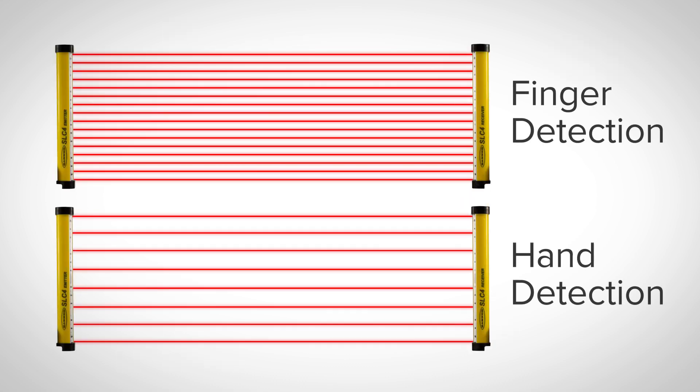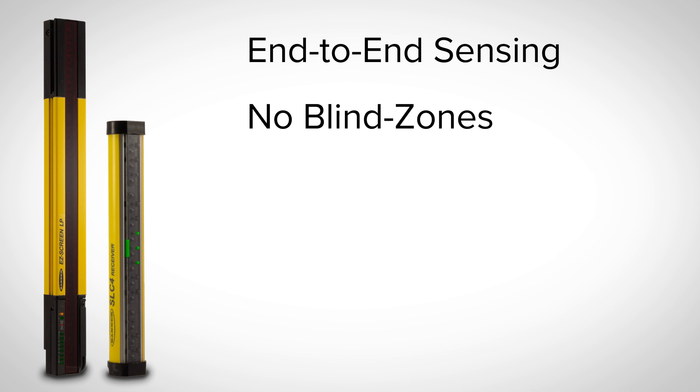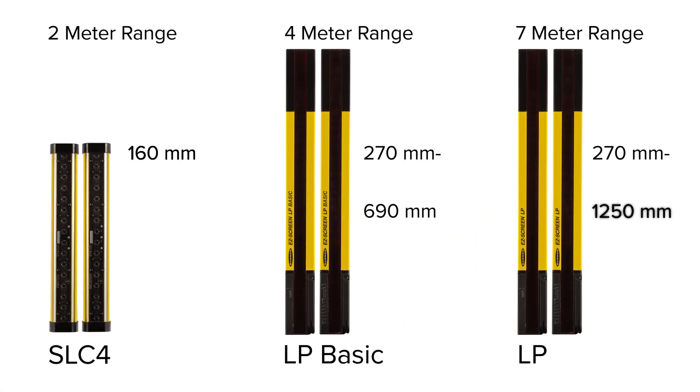All models come in two resolutions for finger and hand detection. They have end-to-end sensing design for fold detection and no blind zones. Lengths range from 160 to 1250 millimeters to fit a wide range of applications.